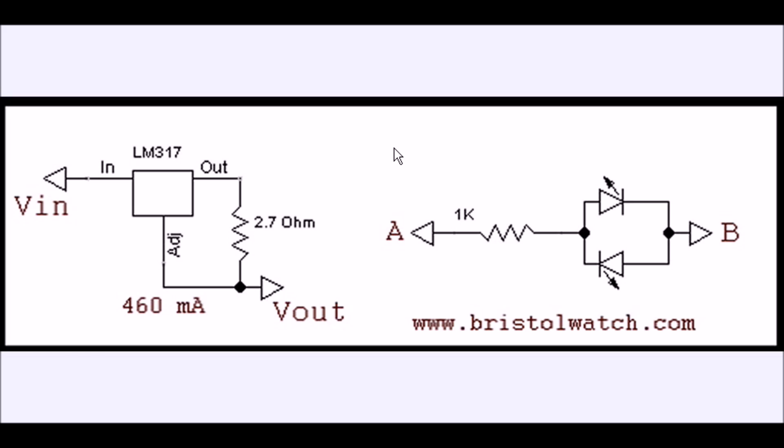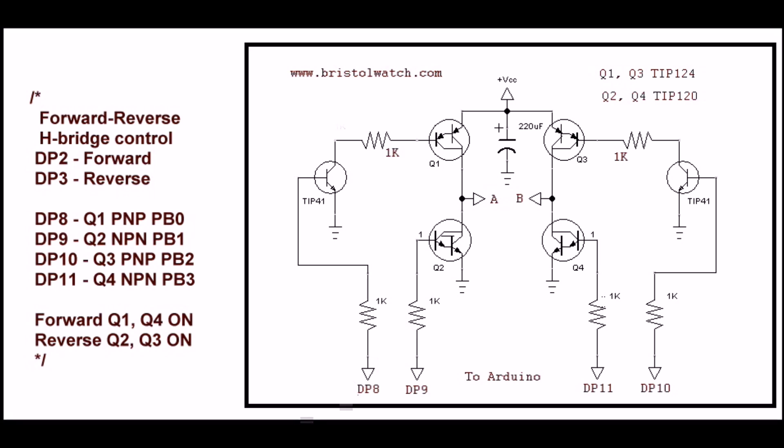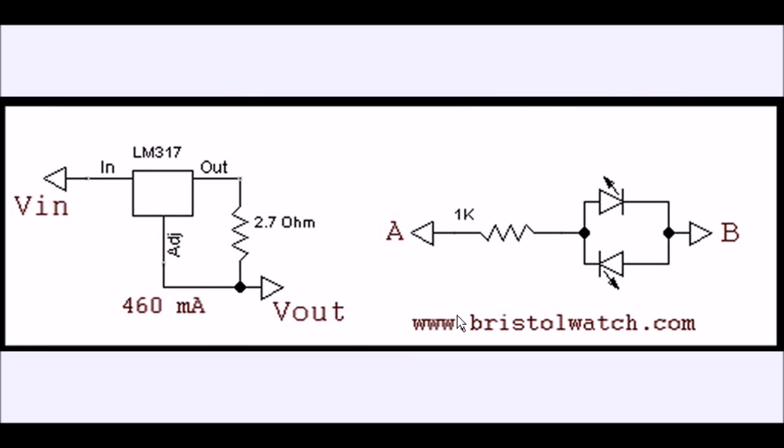Before you hook up a motor, connect this instead. Leave the motor off until you know you got the wiring correct, until you have the programming correct. Just put a couple of back-to-back LEDs through a 1K resistor across A B here. When it's working right, you should switch on one LED cleanly, and it should switch off, and then the other LED should switch in cleanly.